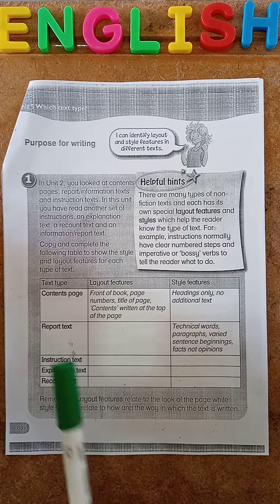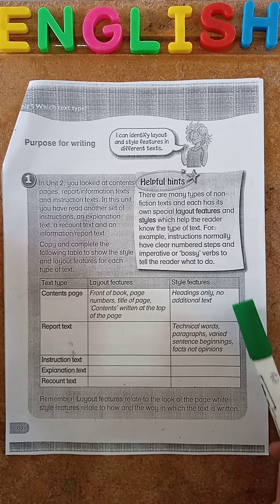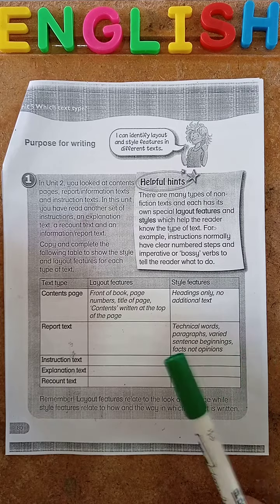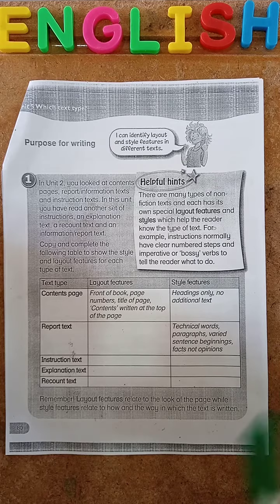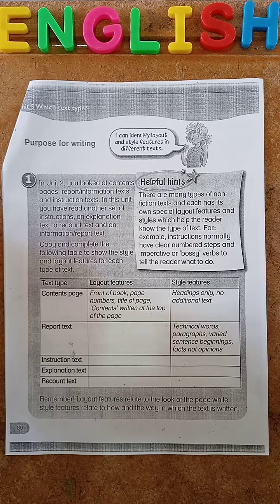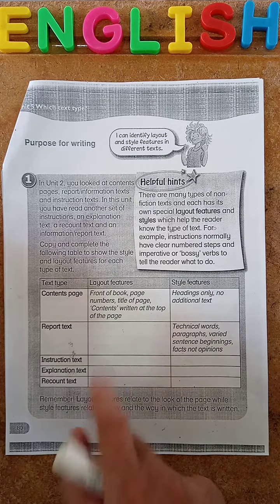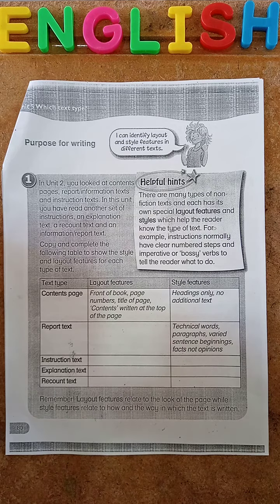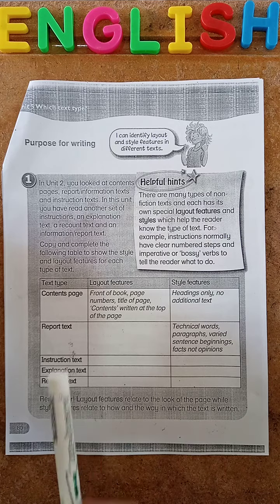Let's look at the second one, the report text. They've shown us the style features: technical words, paragraphs, various sentence beginnings, facts not opinions. Now what else might you see in a report text? You might see a main heading, maybe subheadings. Information might be in bullet points, there might be paragraphs and photographs. These are lots of things you know — I'm just helping you with this one for report text.